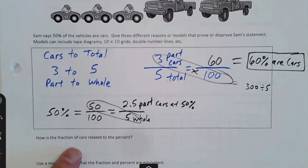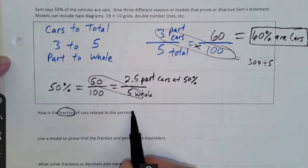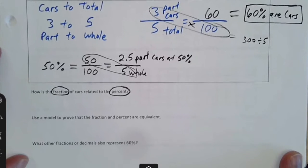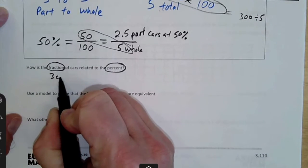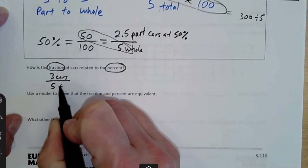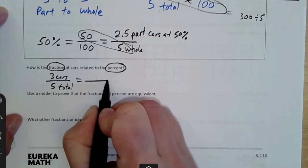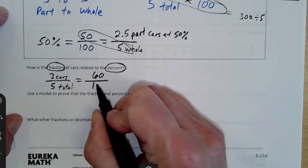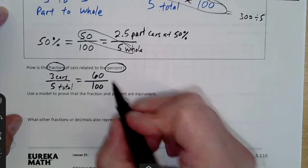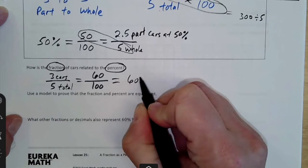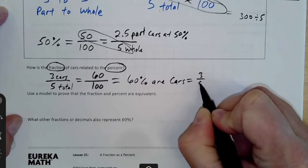How is the fraction of cars related to the percent? So how is the fraction and the percent related? We had three that were cars out of five, which I'll call it the total or the whole amount, three to five. We can make that a percent, which is 60 out of 100. We just make this ratio or this fraction bigger, 60 to 100. So that's how they're related, 60% are cars, which is the same thing as three out of five.